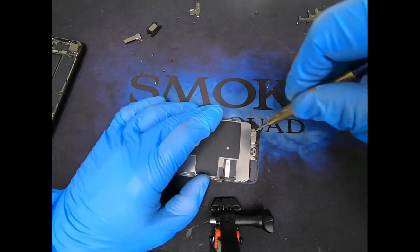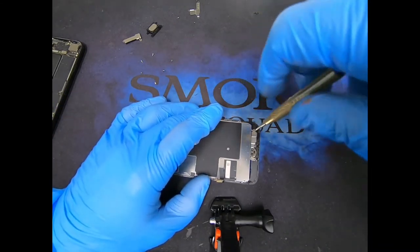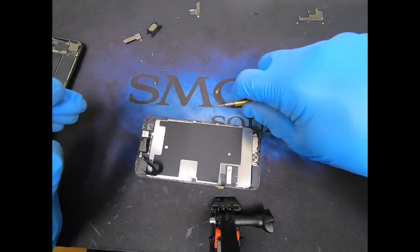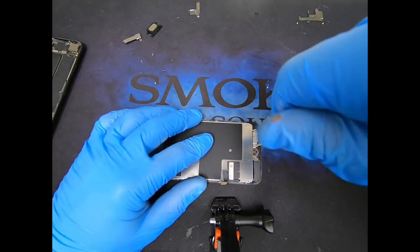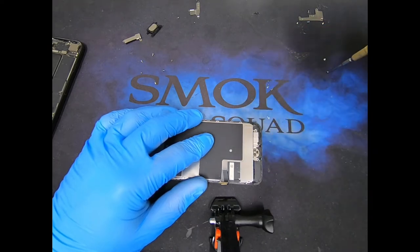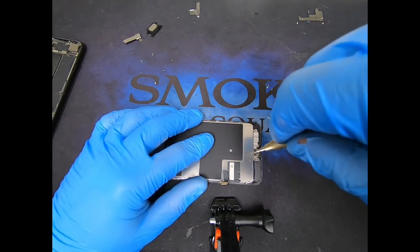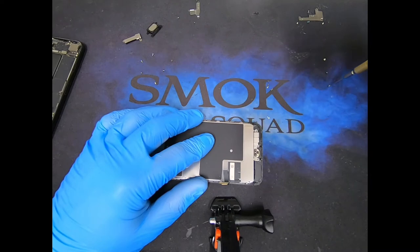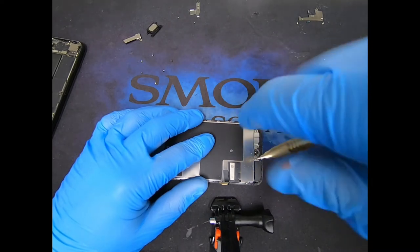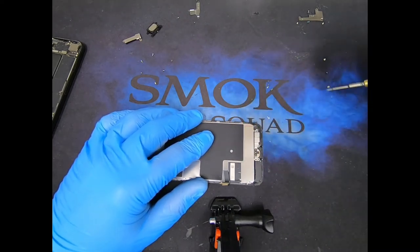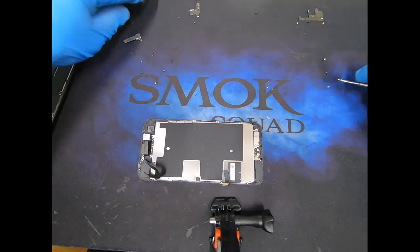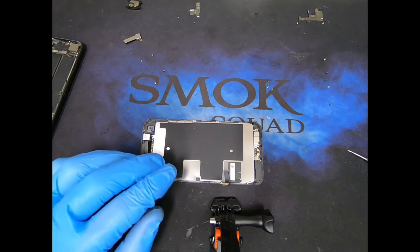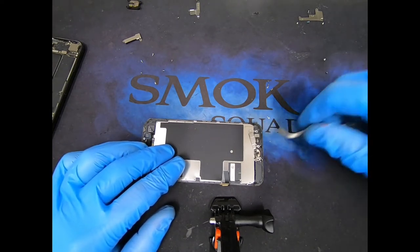Next we're going to remove the home button bracket. Put these screws in order. We're going to remove the bracket.